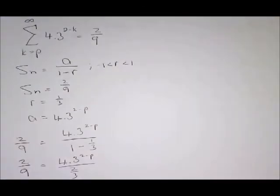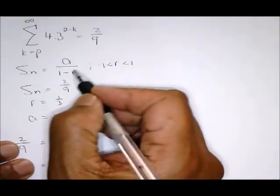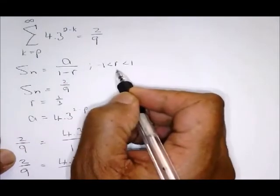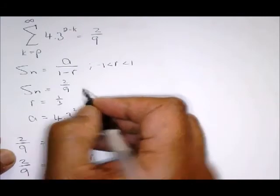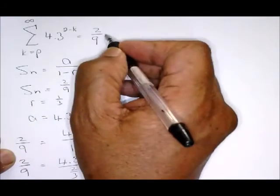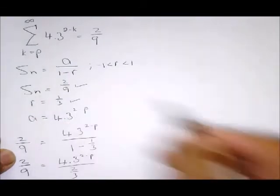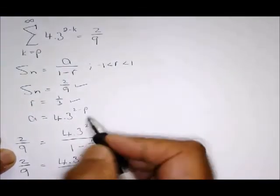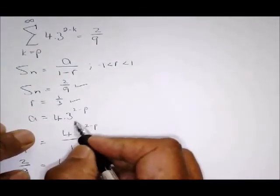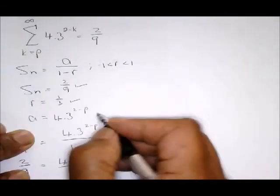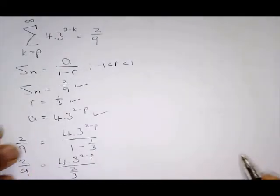So therefore write down the formula for sum from the formula sheet. And write down what you know. You know that the sum is two over nine. We know from the previous example that r is one third. And now a is different now, because I can't use one now. I've got to use p, so therefore that is my new a.